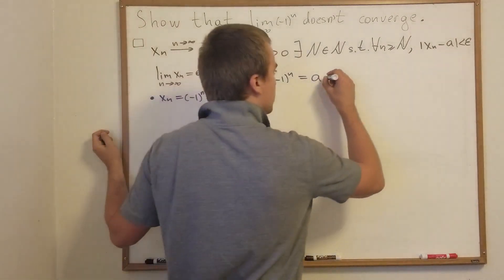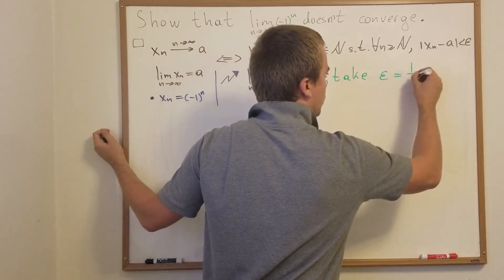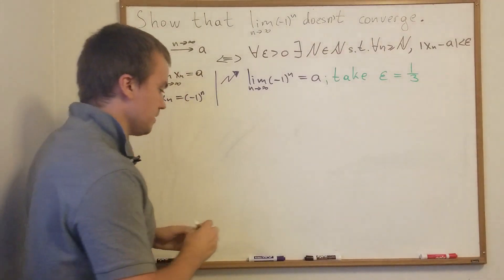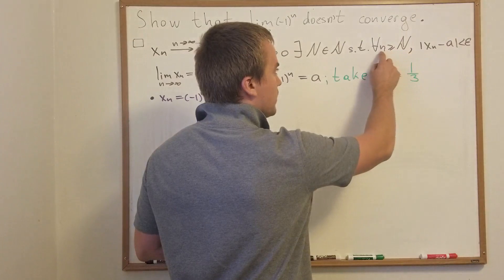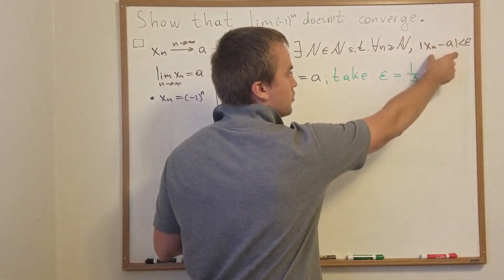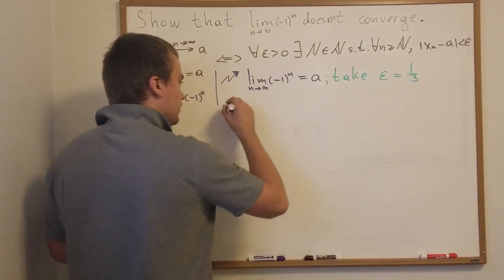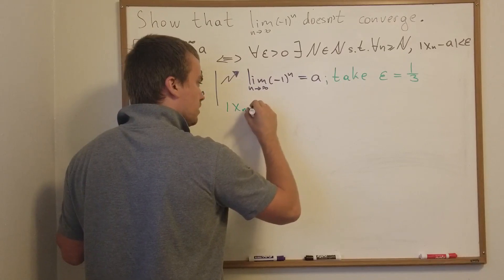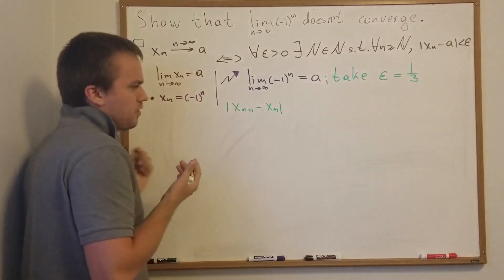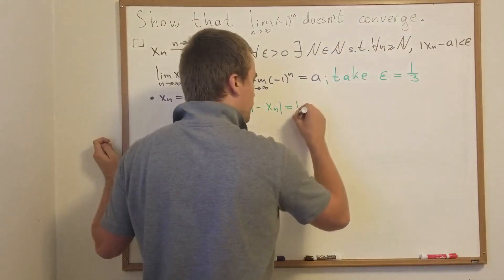Let's take epsilon equals one over three. We can see if we're going to take sufficiently large n, then xn minus a absolute value is less than epsilon. So what we can do is consider two terms: xn plus one minus xn. And then you can ask what we should do next. But here we're going to do a small trick.